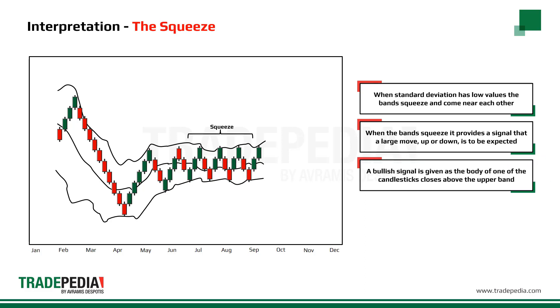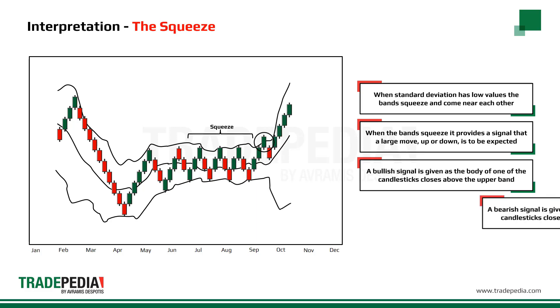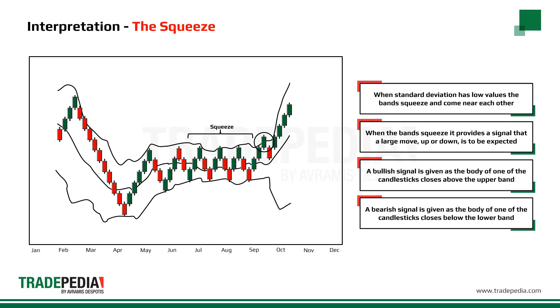A bullish signal is given as soon as the body of one of the candlesticks closes above the upper Bollinger Band. A bearish signal is given as the body of one of the candlesticks closes below the lower Bollinger Band.